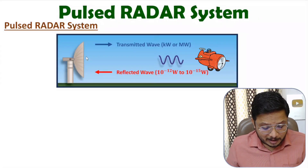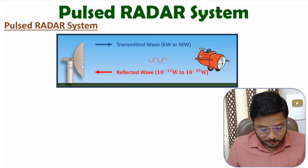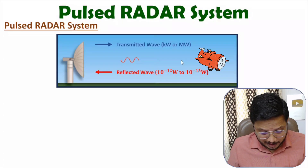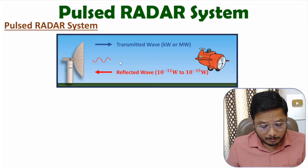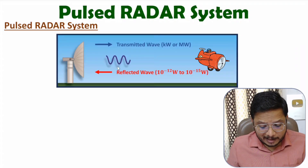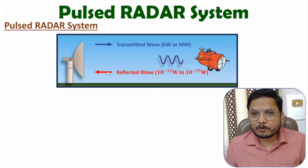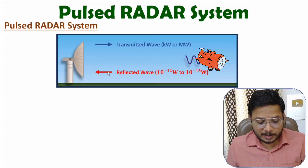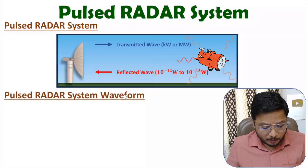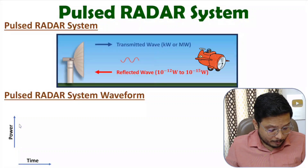So the pulsed radar system transmits a high frequency EM wave for a short duration of pulse. After that it waits for the reflected echo signal from the target, and based on the comparison of the transmitted wave and received wave it identifies the range of the target. Let me now show it to you in terms of the time domain — on the y-axis we have power and on the x-axis we have time.